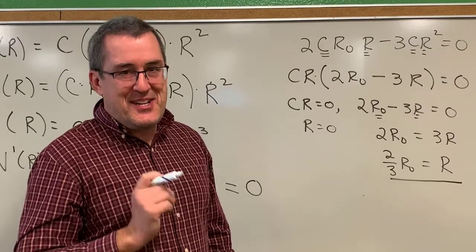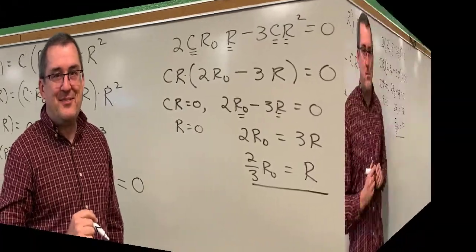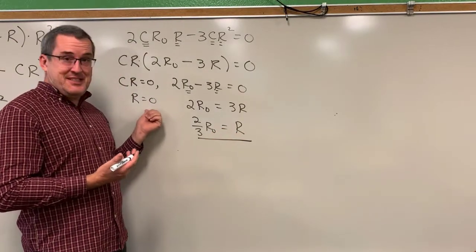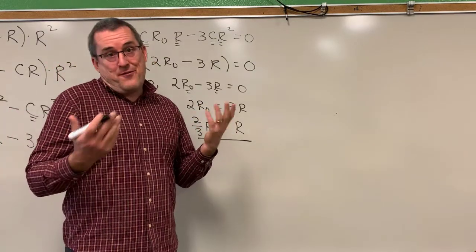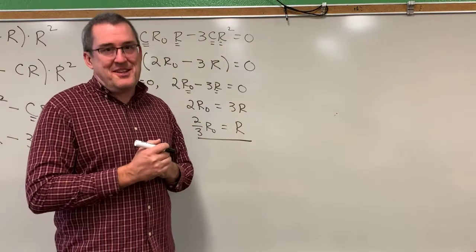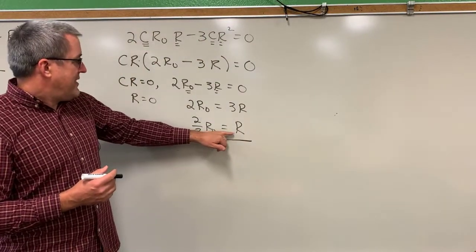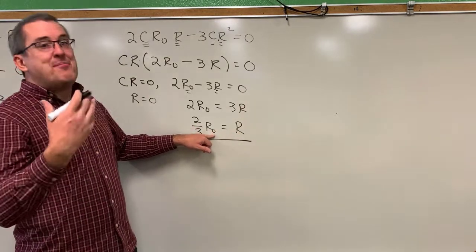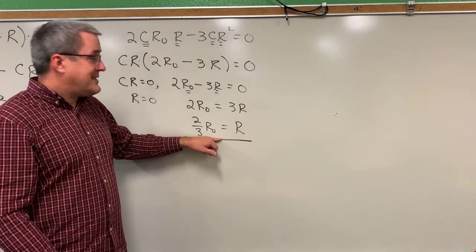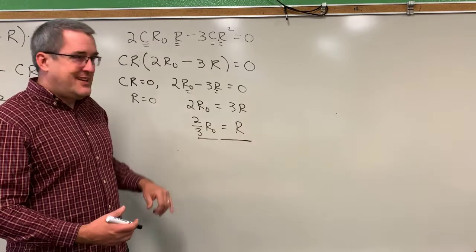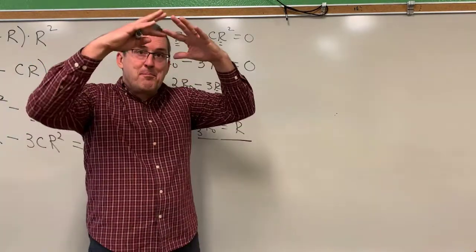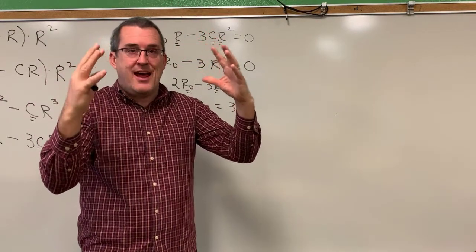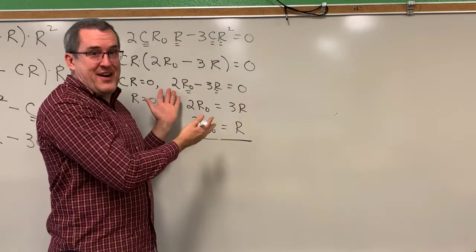But how do we know for sure it's a maximum? We have one more thing to do. Common sense tells us that if the radius of your trachea during a cough were zero units, there would be no airflow — that would be a minimum velocity, not a maximum. But if the radius is two thirds of its normal resting radius, that might produce the maximum airflow. Let's verify mathematically. The maximum occurs at the peak of that function, and at the peak the function is concave down. To mathematically verify that, we take the second derivative.